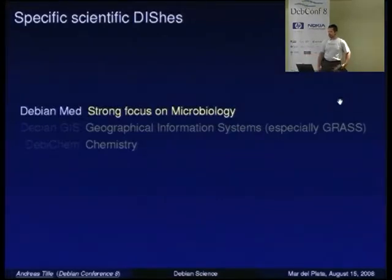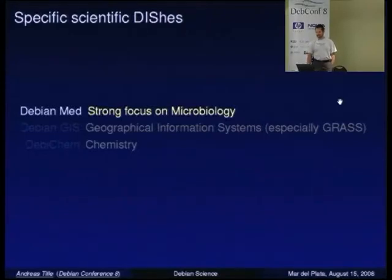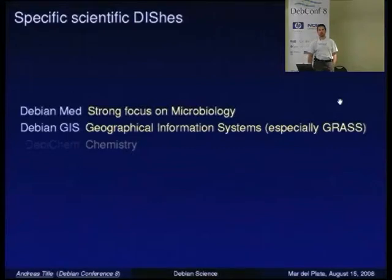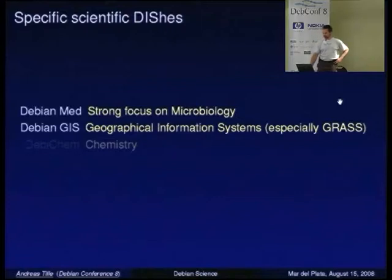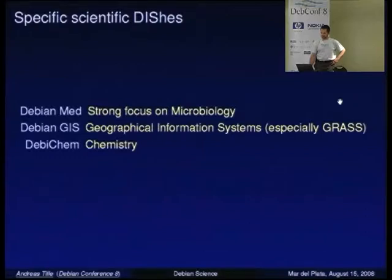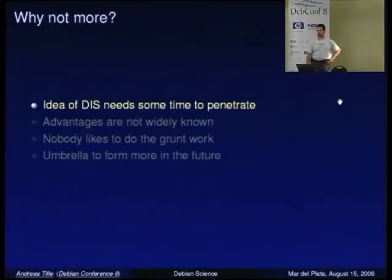We have some scientific-specific dishes in Debian. One of them is: if you are working in the field of biology, you can use the dish Debian Med. If you are working on geographic information systems, you can use the Debian GIS dish. And there is even for chemists a Debian project that tries to work for them. But for the others, there is not so much.